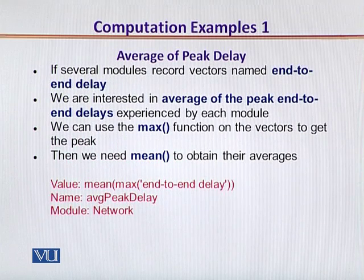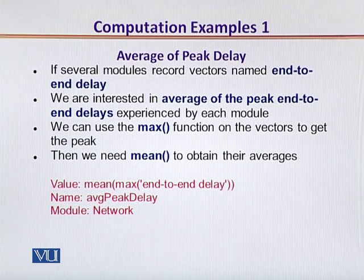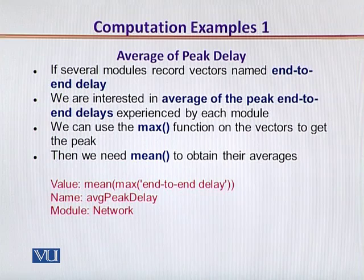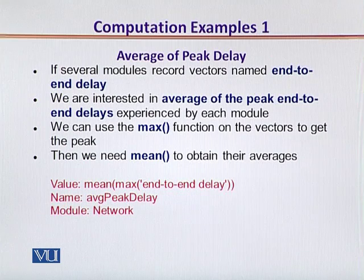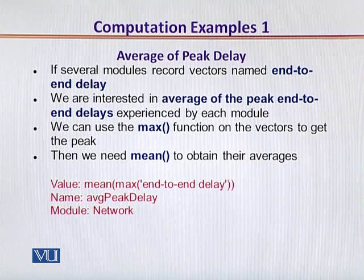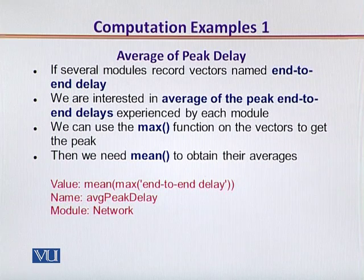As another example, if we are interested in measuring the average of the peak delays that transmissions on a certain network experience in an end-to-end manner, we need to call two functions. We call the max function on the vector to give us the peak delay, and then we call the mean function to obtain their averages. We first compute the max of 'end-to-end delay' and then determine the mean. Notably, in the analysis editor, if a scalar data name has spaces inside, it must be enclosed in single quotes.